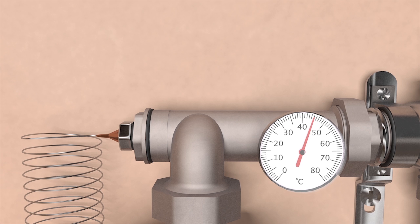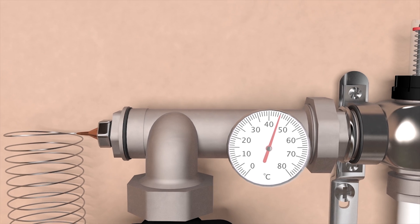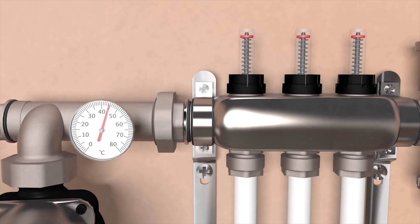The only direction the water can travel is up through the pump into the top manifold flow bar. Here the thermometer will give you an accurate reading of the water temperature going into your floor loops.